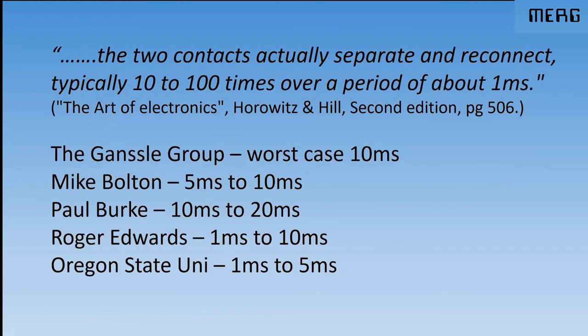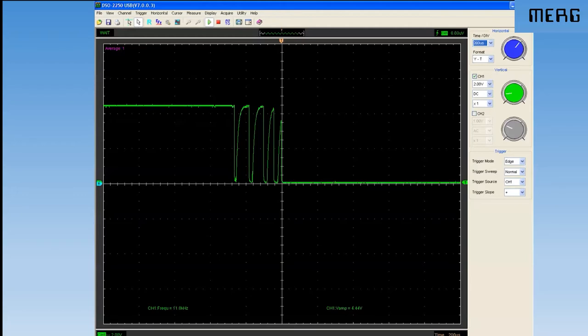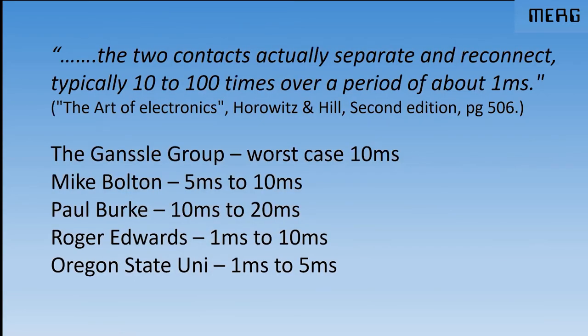You can take your pick about the definition of switch bounce. So the first one says it'll happen up to 100 times. That time only one, two, it took five goes in that particular case. That's a real image, a real screen capture. It lasts at one millisecond, says this prestigious book. The Ganslow Group, a company that made tests with a whole range of different switches and then worked out what the figures were. Their worst case was that debounce could last as much as 10 milliseconds. Mike Bolton says 5 to 10. Paul Buckley. These next three are all members doing their own tests. Oregon University say 1 to 5. So you can take your pick.